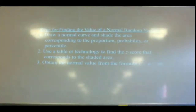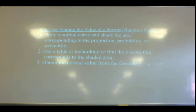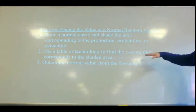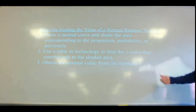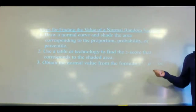Steps for finding our value for the normal random variable: draw a normal curve, shade the area corresponding to the proportion, probability, or percentile. Use a table — we're going to focus on using the table. Calculators and computers will do this too, but we're practicing by hand. Then find the Z score that corresponds to the shaded area, and obtain the normal value from our formula.